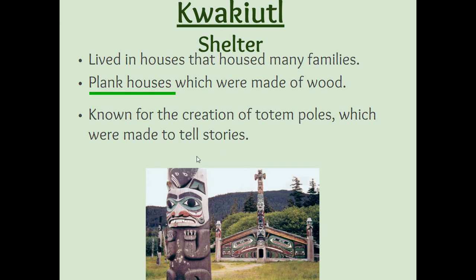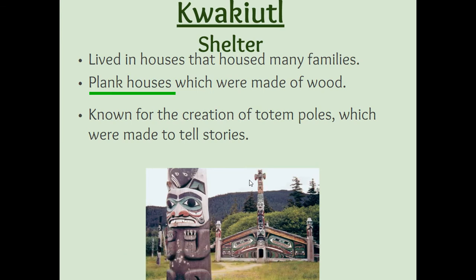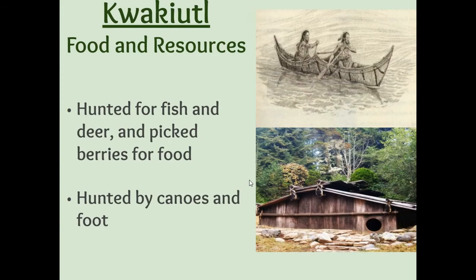They also use totem poles to tell the stories of their culture and their histories. Their food and natural resources are going to depend on the fact that they're near an ocean and lots of rivers. So they hunt for fish and deer, and they also pick berries. Those berries grow because it rains so much, so they have access to those berries and other plants.